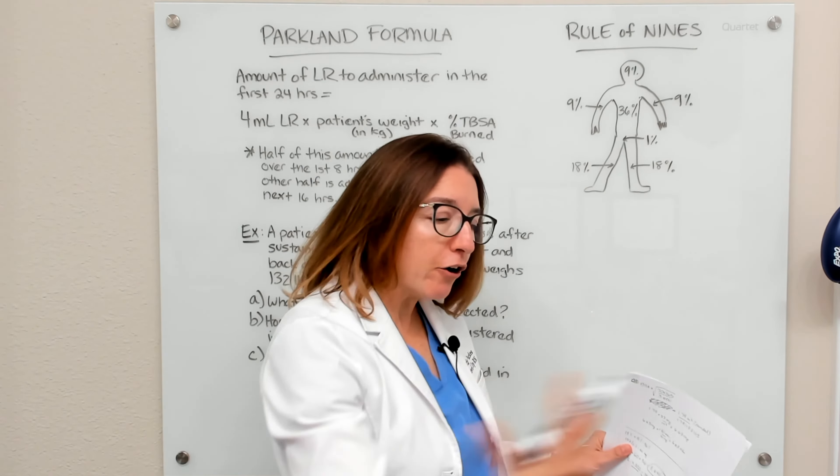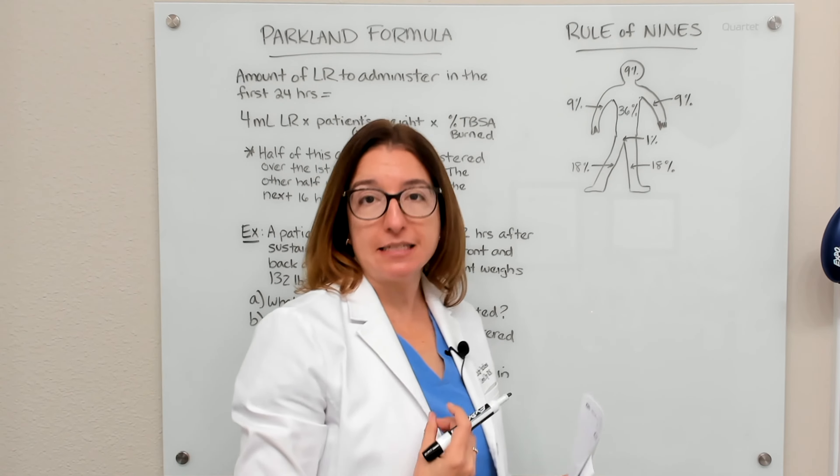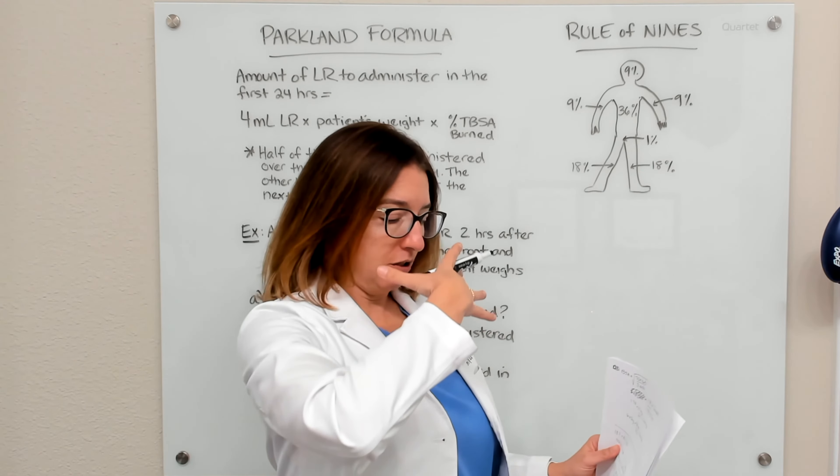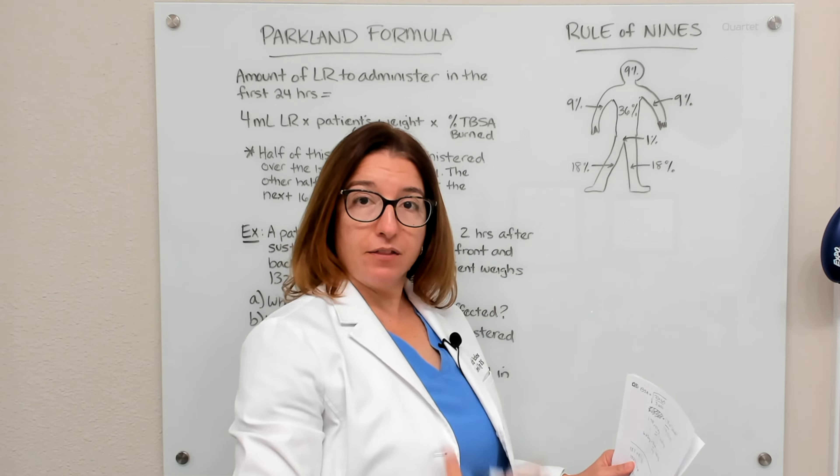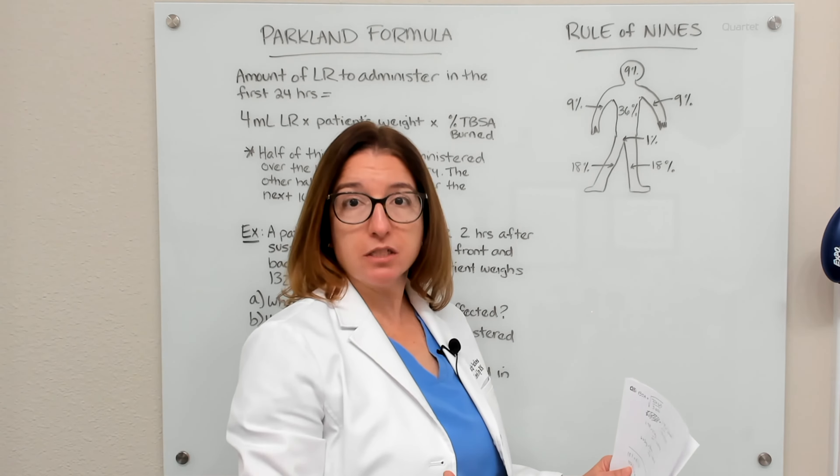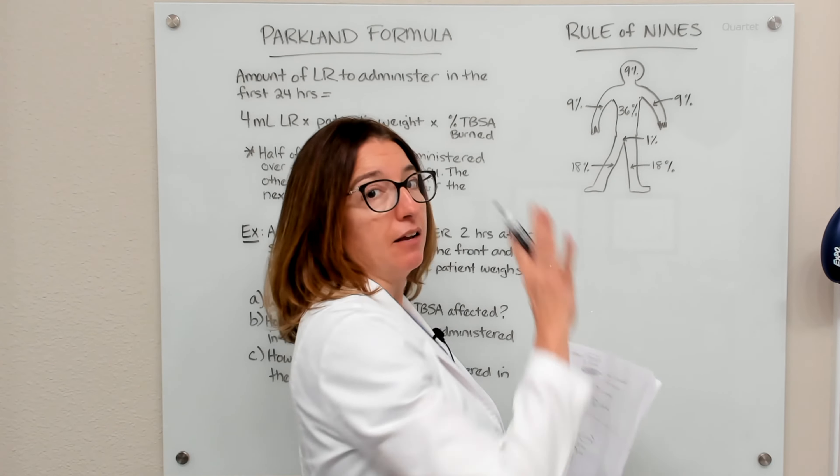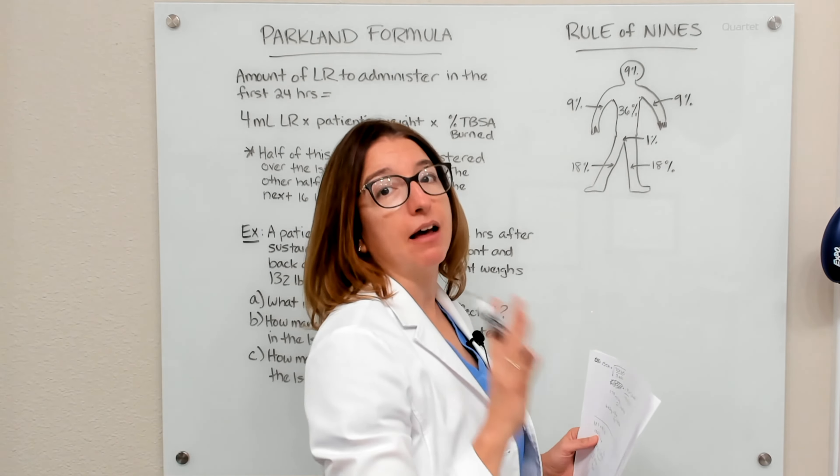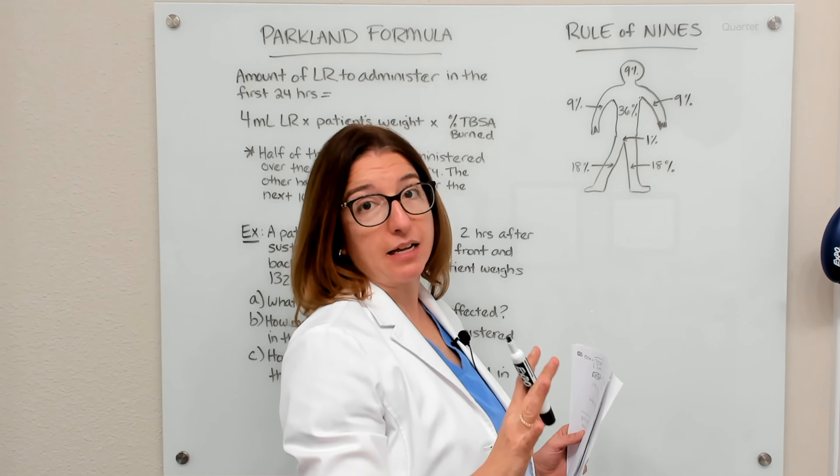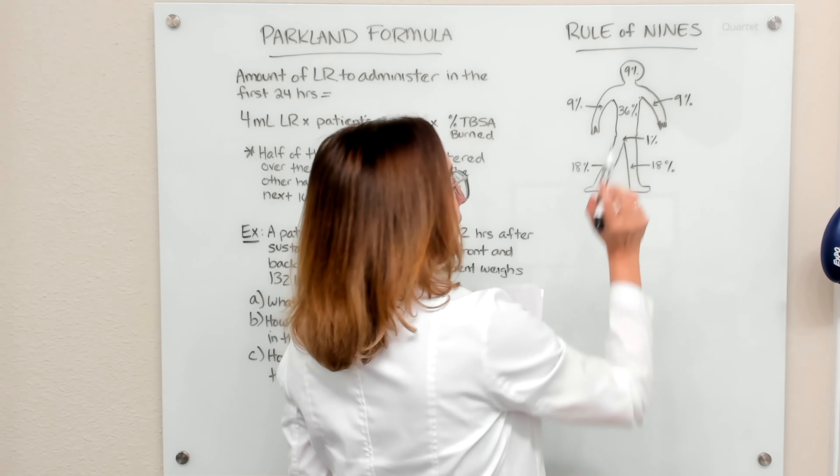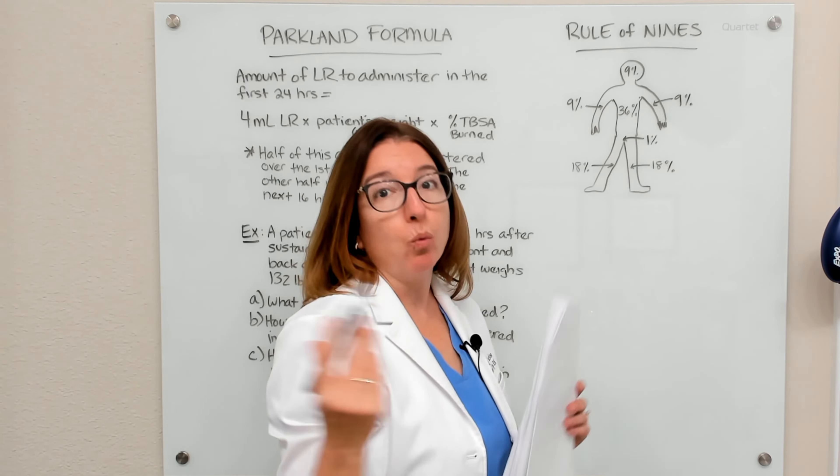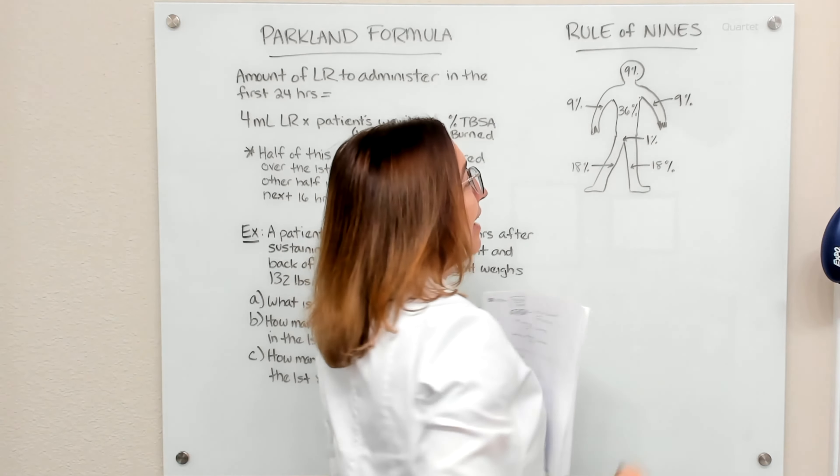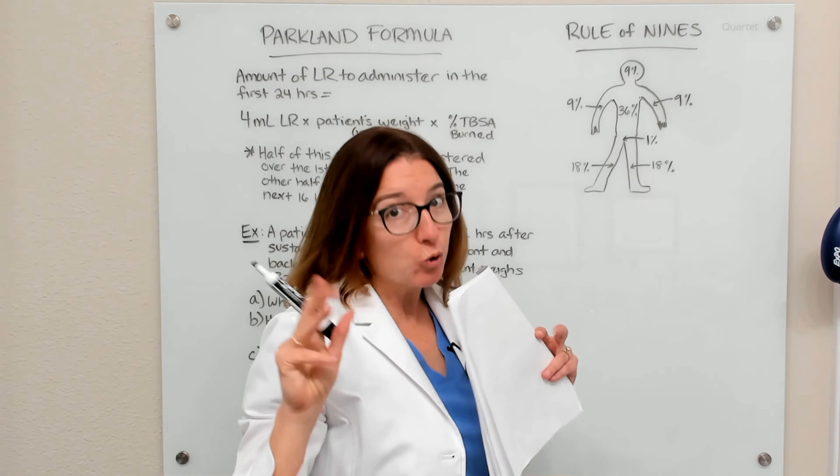The entire trunk is 36 percent. So if just the front of the trunk, so the chest was burnt, that would be 18 percent. And if it was the back of the trunk, that would be 18 percent as well. If the groin is affected, that gets assigned 1 percent. So that's kind of the outlier in this rule of nines.